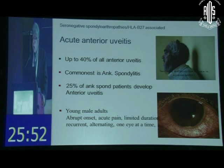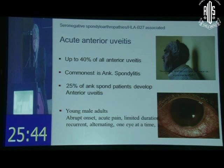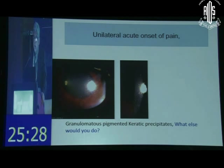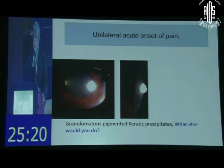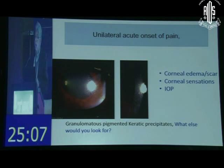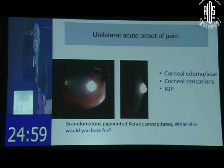Typically seen in young male adults, but we do see them in women. Abrupt onset, remember — acute pain, limited duration, a recurrent disease that shifts from one eye to the other, never together in both eyes. Here is a patient with unilateral acute onset of pain and pigmented KPs. Look for corneal edema, any corneal scar. We need to do corneal sensation testing whenever examining a patient, because that gives you the clue. Record the intraocular pressure. What are we dealing with?